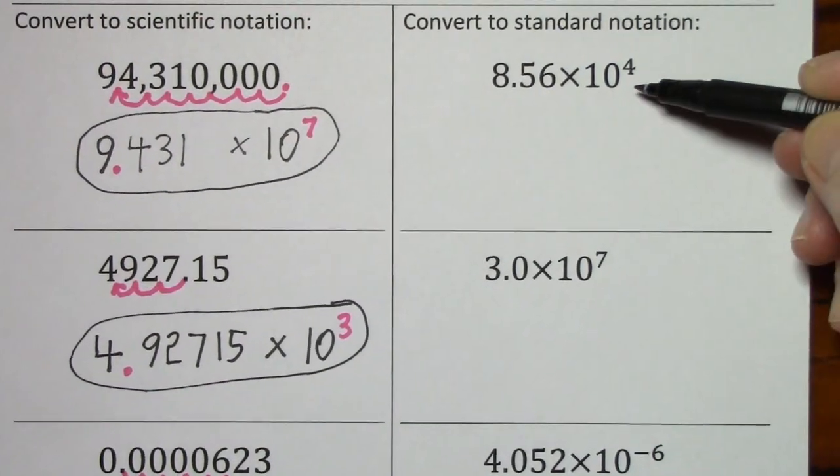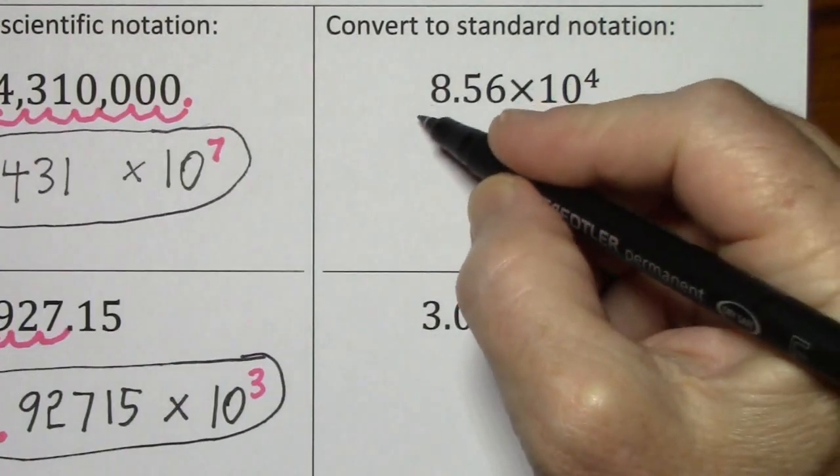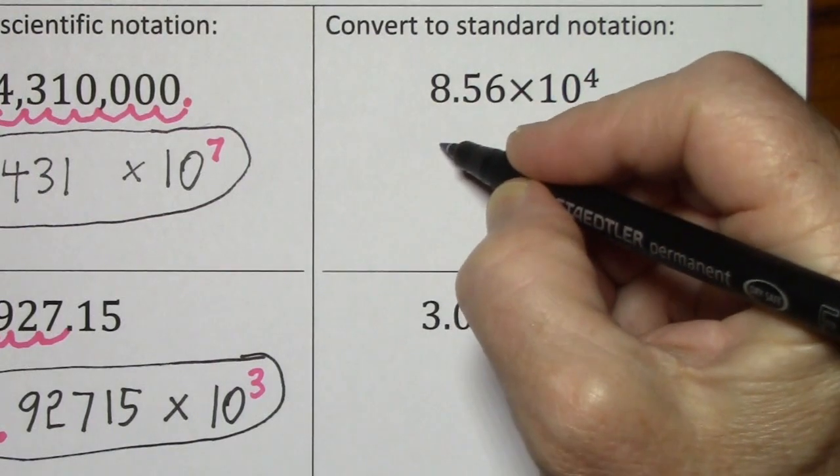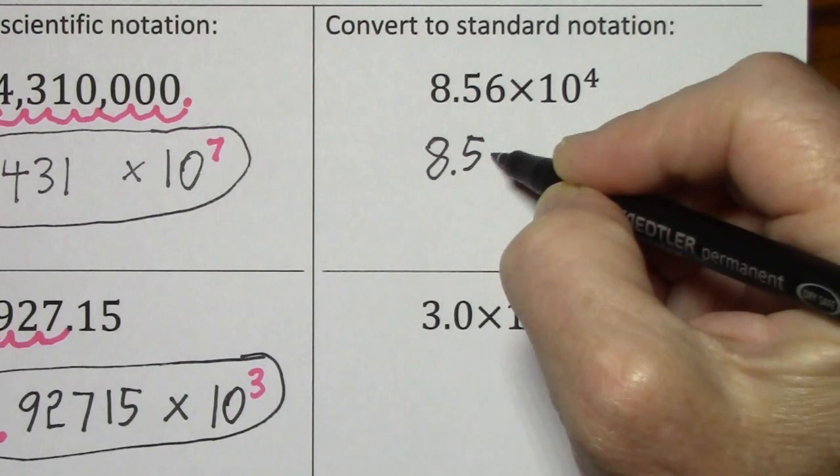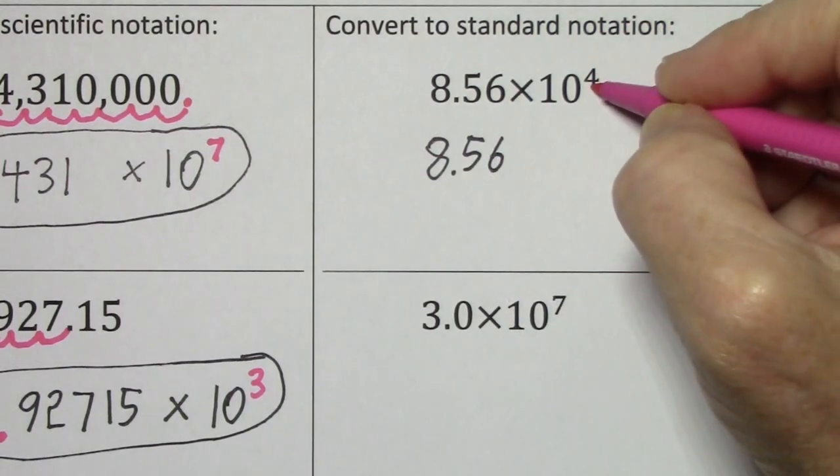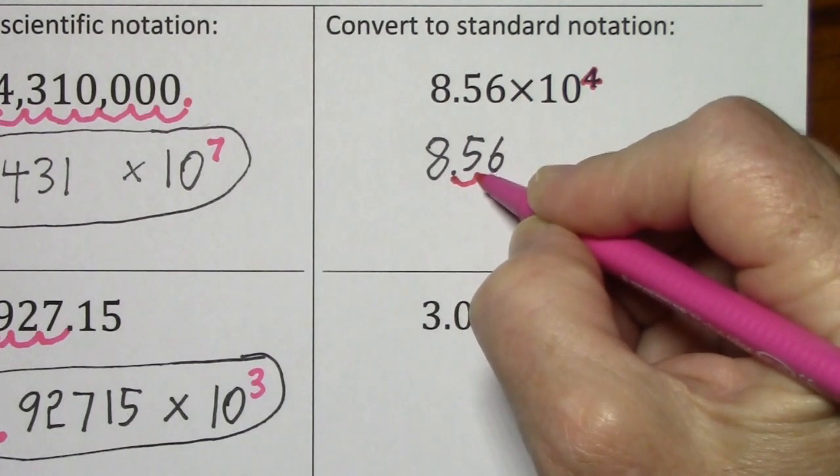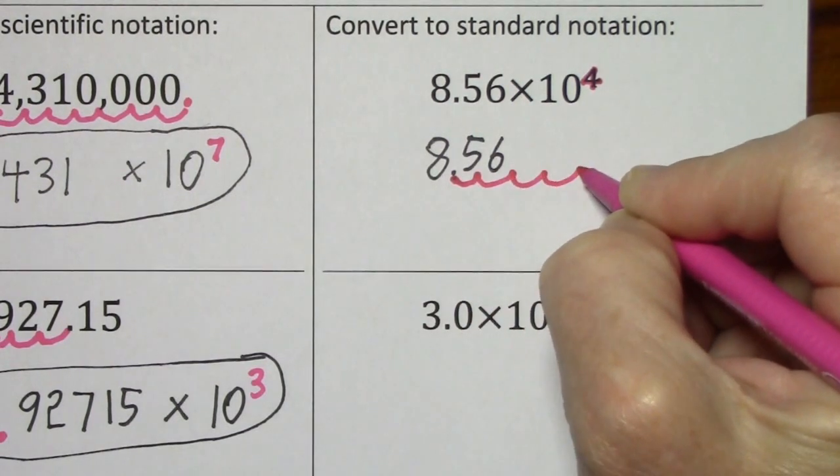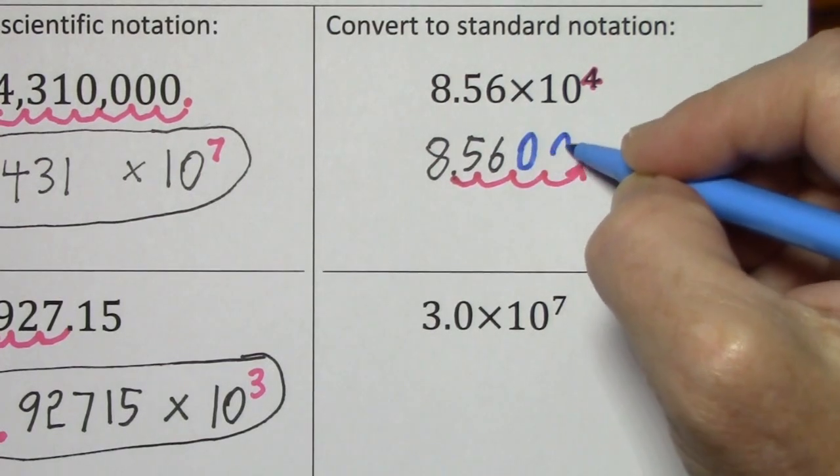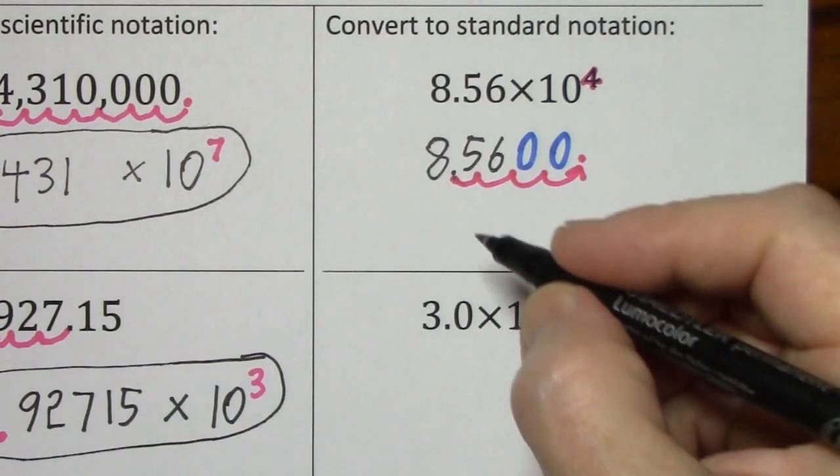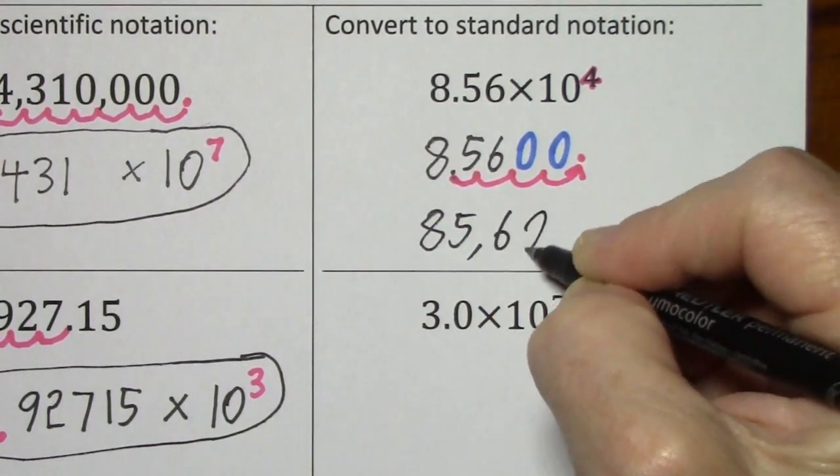Now we're to go from scientific notation to standard notation. So we start with our 8.56. And because this is 10 to the fourth, we're going to take this decimal and go four spaces. We'll need zeros to hold these spaces, so we end up with eighty-five thousand six hundred.